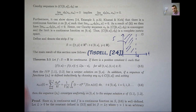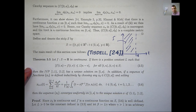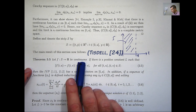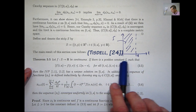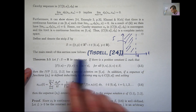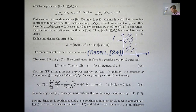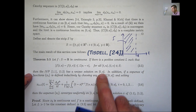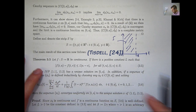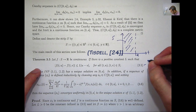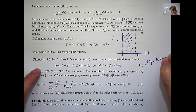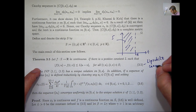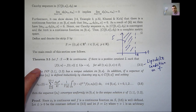Consider the initial value problem 1.1, 1.2. Let the right-hand side f be continuous on this strip. If there exists a positive constant L such that f satisfies the Lipschitz condition on the strip — that is, |f(t,x) - f(t,y)| ≤ L|x - y| — then the initial value problem 1.1, 1.2 has a unique solution on this interval. Condition 3.5 is the well-known Lipschitz condition on f, which is quite common in the analysis of differential equations.